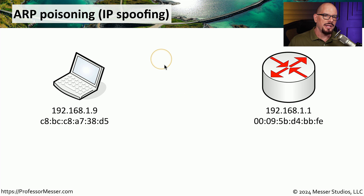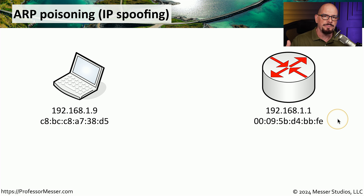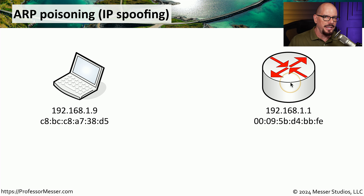One way that a third party could sit in the middle of a conversation is through the use of ARP poisoning. This is also called IP spoofing, where the attacker is pretending to be an IP address that they really are not. In this example, we have two devices on the network: a 192.168.1.9 IP address with its associated MAC address, and a router at 192.168.1.1 with a completely different MAC address. The way that Address Resolution Protocol, or ARP, works is that the device on one side needs the MAC address of a device that it wants to communicate to.